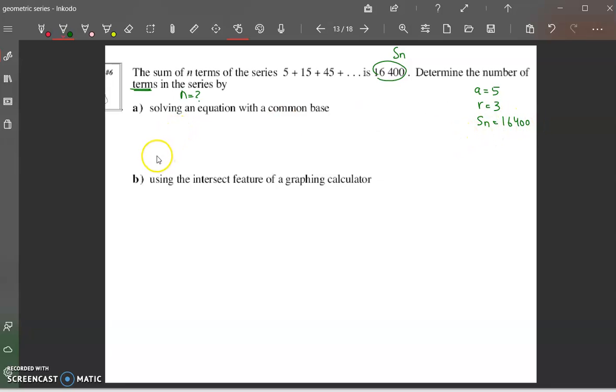So we're going to use the formula, the first one for sum, because that's the one we have the most information for. And put in as much as we can for this formula. So what we know is that this is 16,400. A is 5,